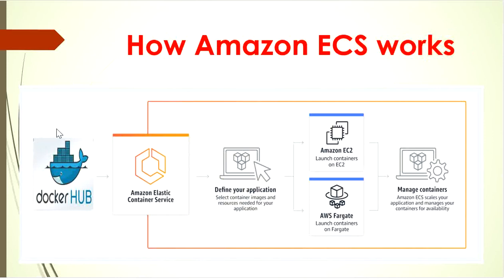So here is how our application will work: first we will create one Docker image, then we will push this Docker image into Docker Hub, and then ECS will pull this image from Docker Hub. Inside ECS we can use both Amazon EC2 or AWS Fargate. In this example we will use Amazon Fargate, which is serverless compute for containers.